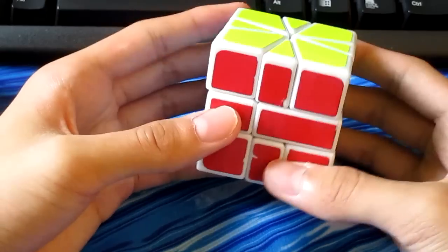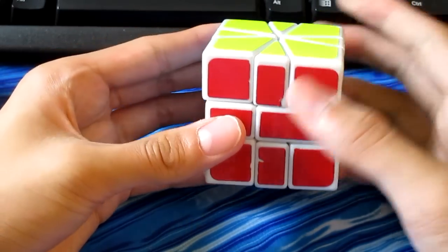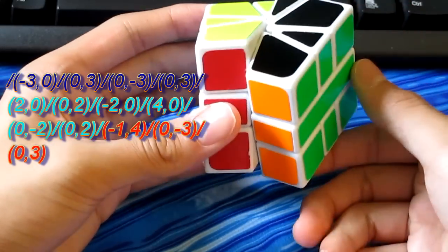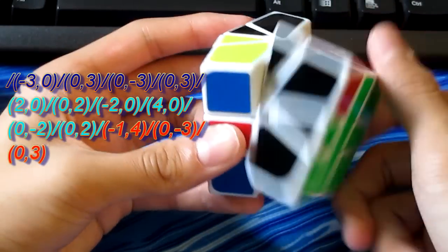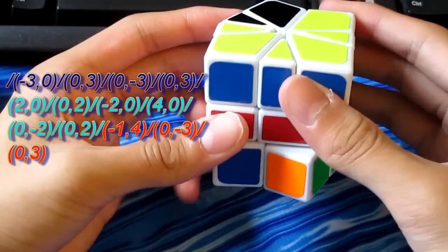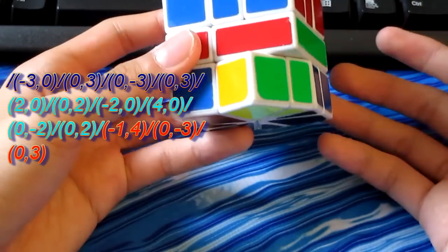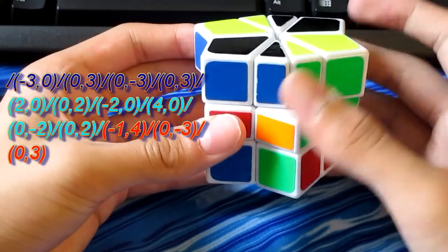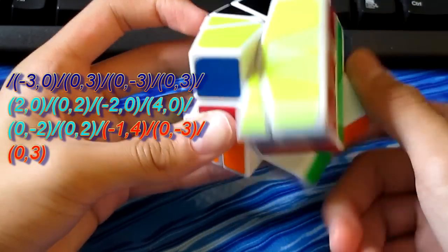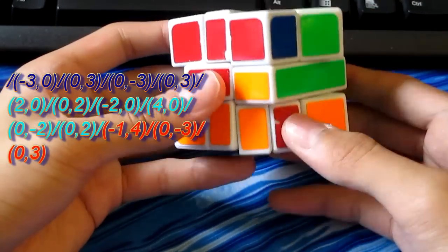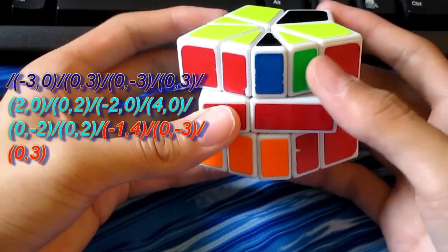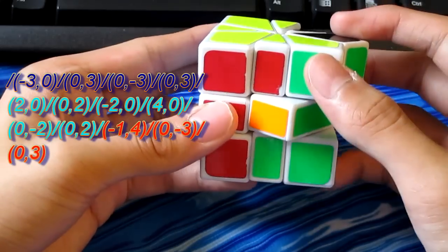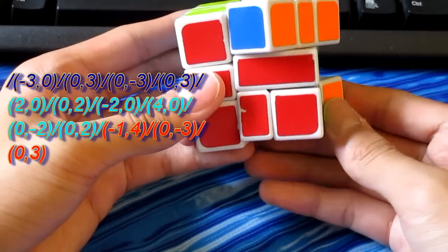Although this is a long algorithm, I will give you a little tip to memorize it. First, the first four coordinates have zeroes as well as threes only. The next six will only have multiples of two as well as zeros. Then there's a negative one, four. And then the last two coordinates have only threes and zeros.